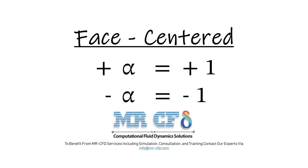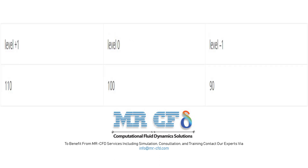In the central composite model of the face centered type, the value of alpha is considered to be one. Level plus alpha and level minus alpha are equal to level plus one and level minus one respectively, and level zero has a value in the middle of the maximum and minimum values. This type has three levels for dividing each input parameter. For example, suppose an input parameter has a maximum and minimum value of 110 and 90 respectively; values 90 and 110 indicate level minus alpha and level plus alpha, and the mean value of 100 indicates level zero.